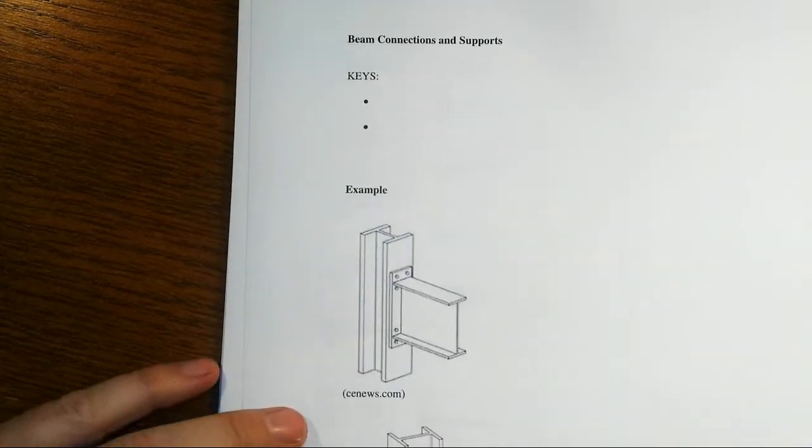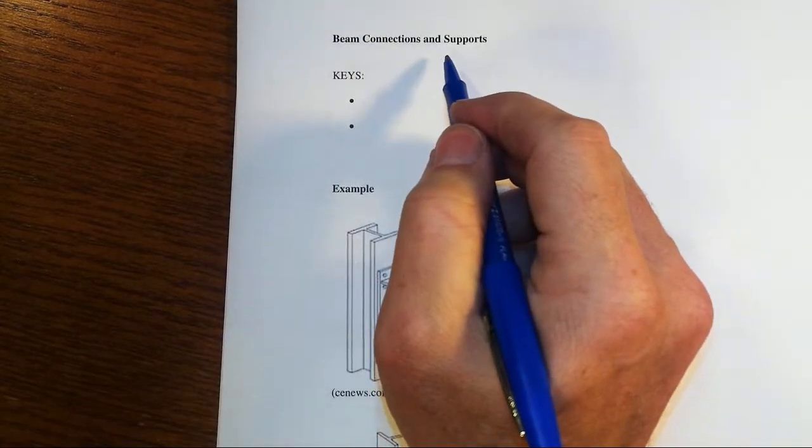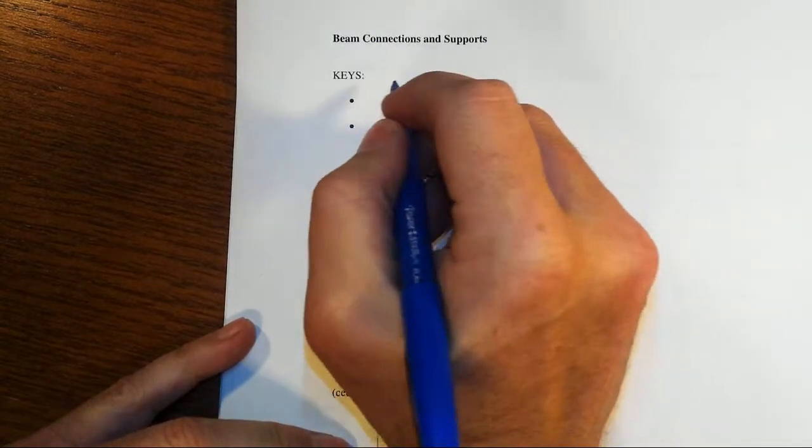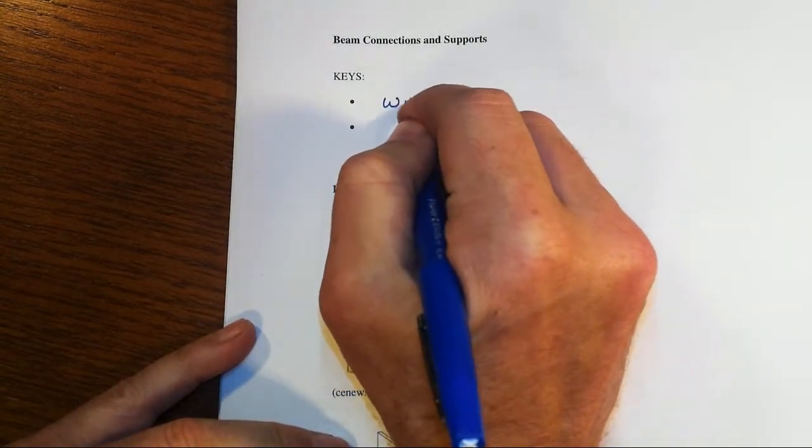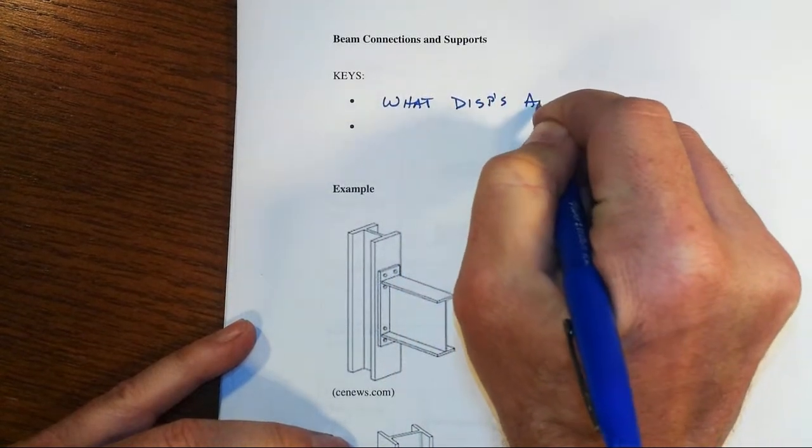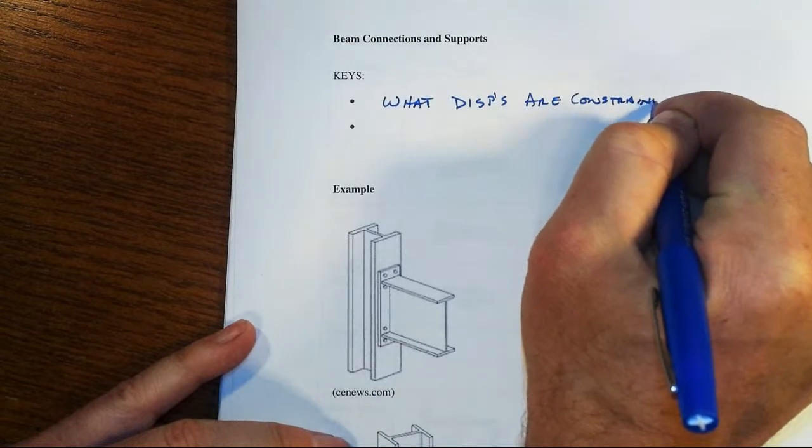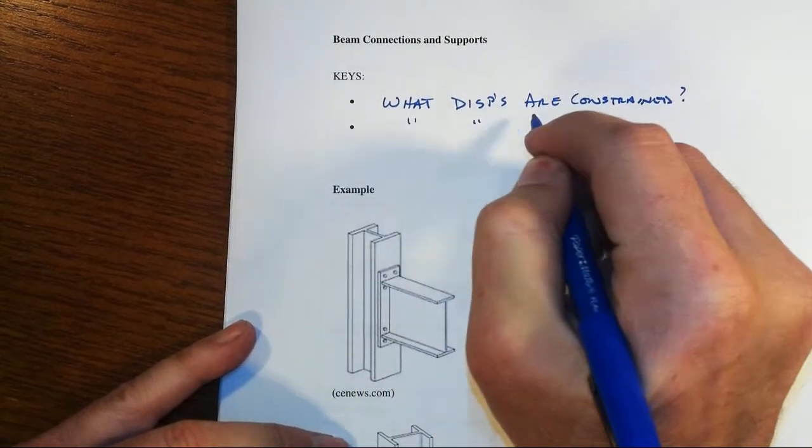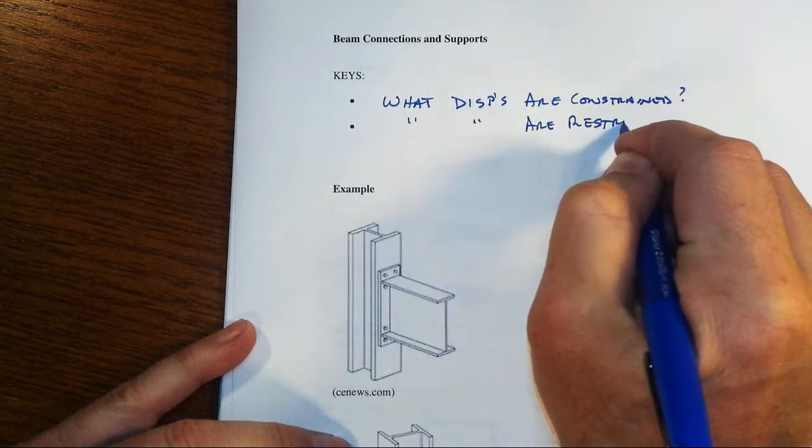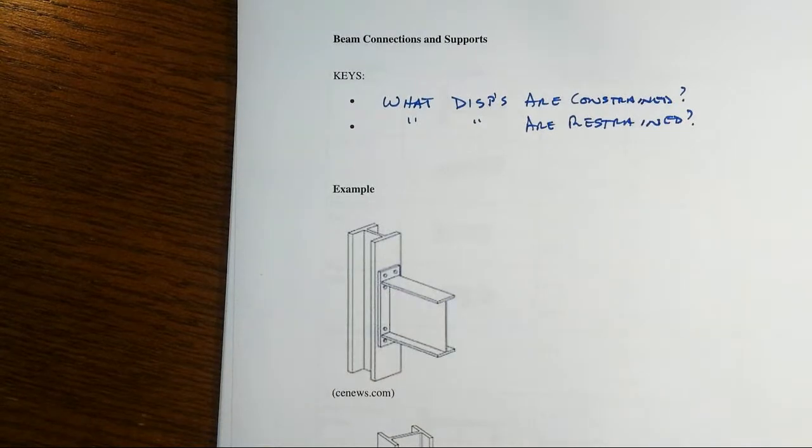So let's take a look at what that might be all about here. And the keys, as we think about this, these boundary conditions are going to be associated with connections, ends of the beam maybe, the support conditions, and it's all going to be about what displacements are constrained or what displacements are restrained.